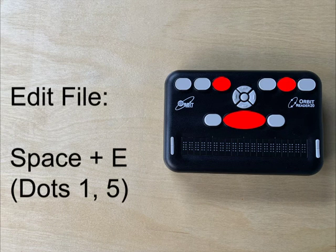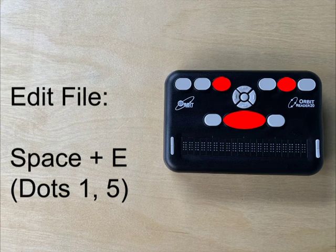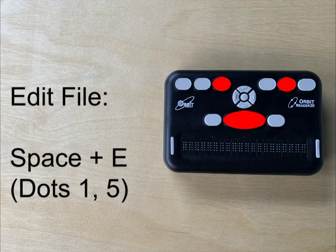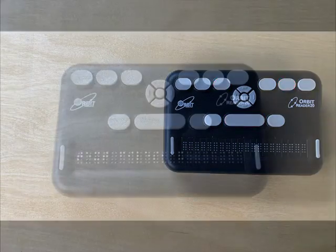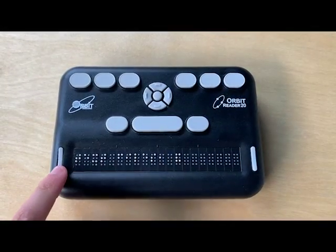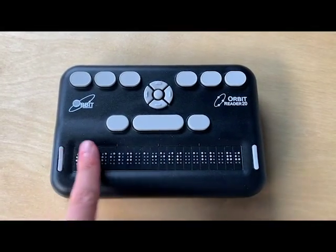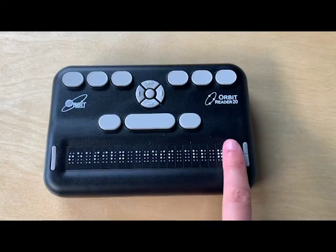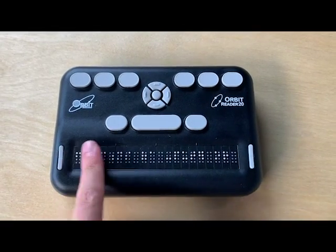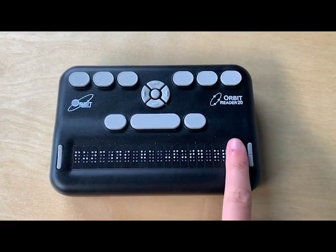To edit an existing file, press the chord which is dots 1 and 5. This will open the current file from the file manager or reader in Editor mode. While in Editor mode, the navigation controls are slightly different when compared to the normal reading mode.